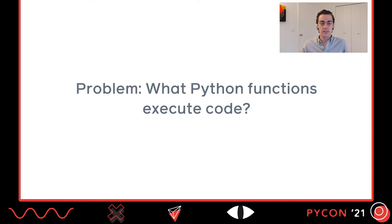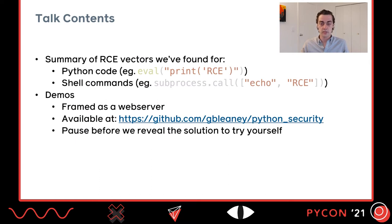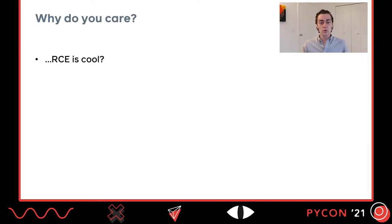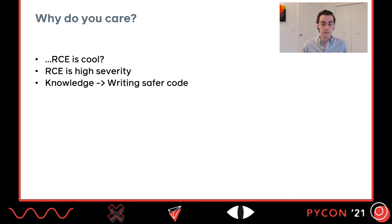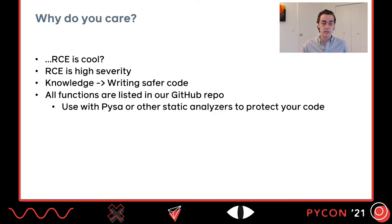The question becomes: what Python functions execute code? In this talk, we're going to answer that. We'll summarize all the RCE vectors we've found for Python code as well as shell commands. Other execution types like SQL are out of scope. The talk comes with demos framed as a web server, available at the GitHub link shown here. You can download that repo, boot up the server, and follow along. Whether you care about RCE because it's cool, high severity, better code review, or research — all the functions we enumerate are also listed in the GitHub repo, and you can use PISA or any other static analyzer to detect them in your codebase.